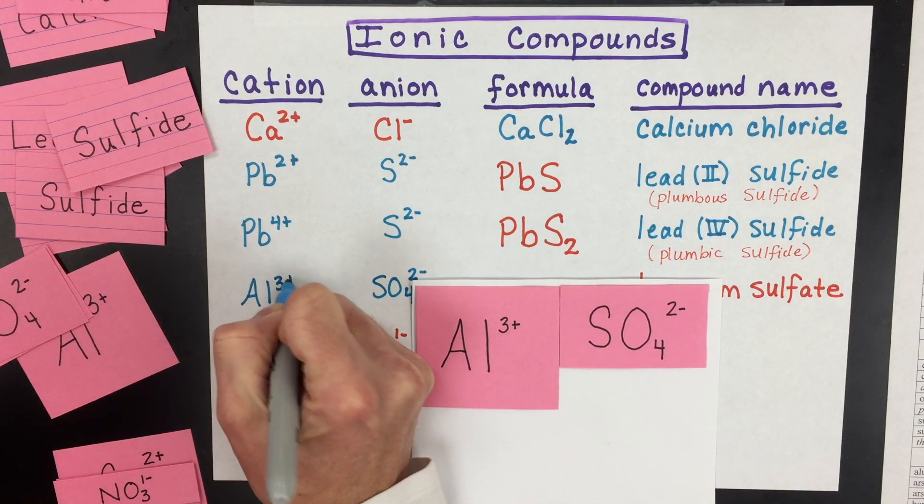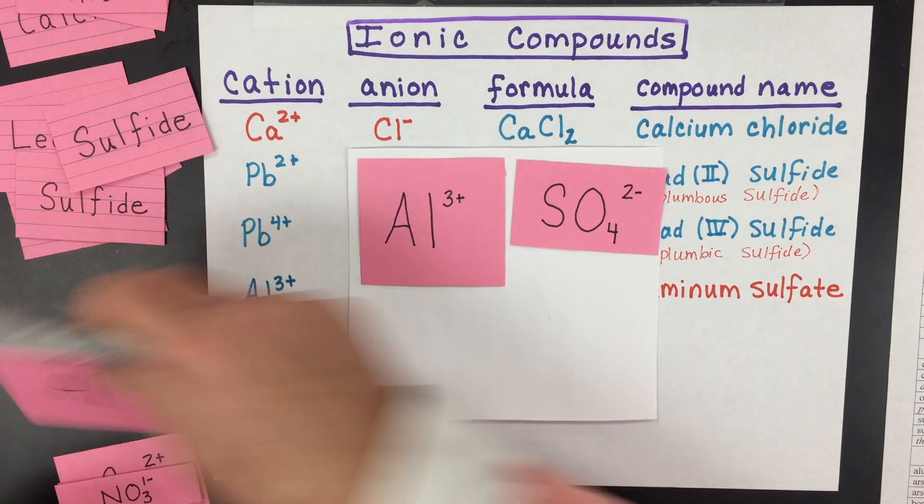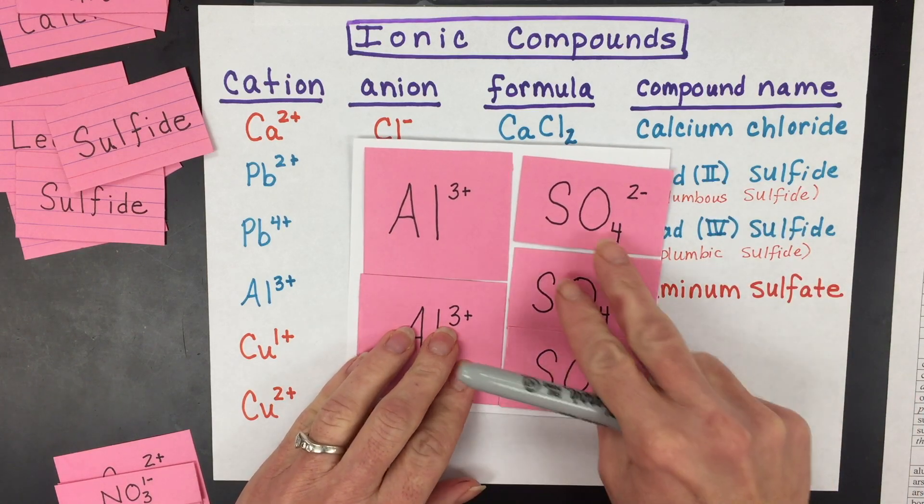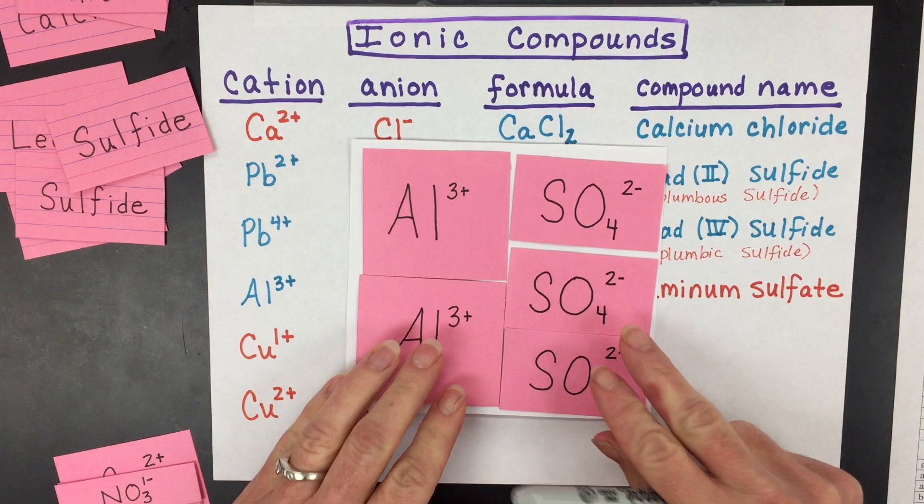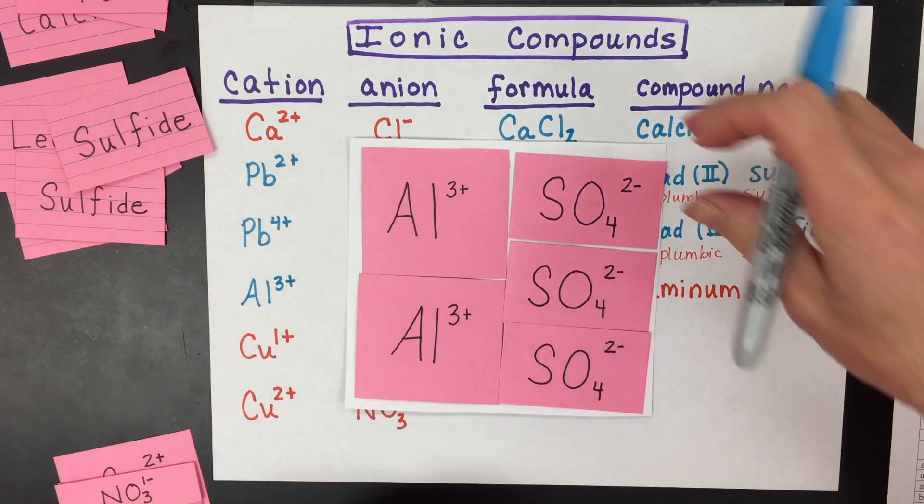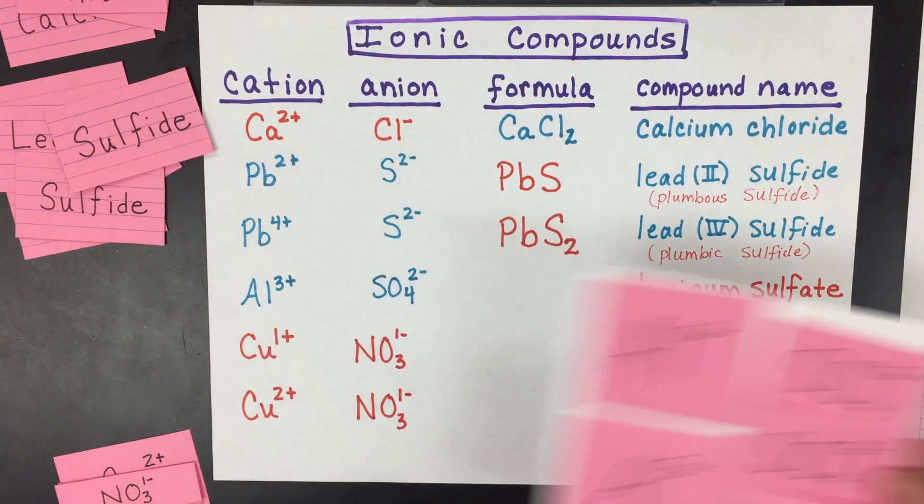And so we have a three plus and a two minus. So for the net charge to equal zero, they have to have a common multiple, and what that multiple is, is six plus and six minus. So when we write this one, we're going to need to say that we have three sulfates and two aluminum ions, so we're going to need to use something different this time, which are using parentheses to denote the structure that we made.